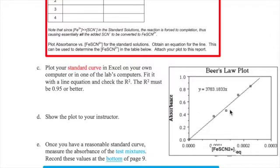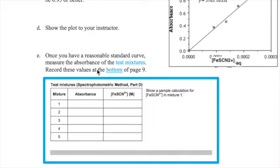Once your plot is approved, take your test mixtures, which you made earlier, and measure their absorbance values. Record these values in the table at the bottom of page 9.